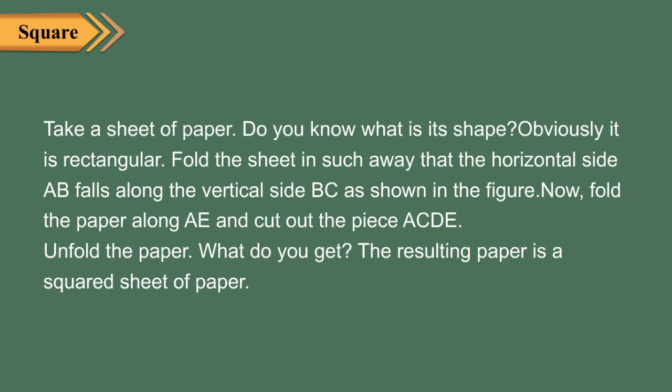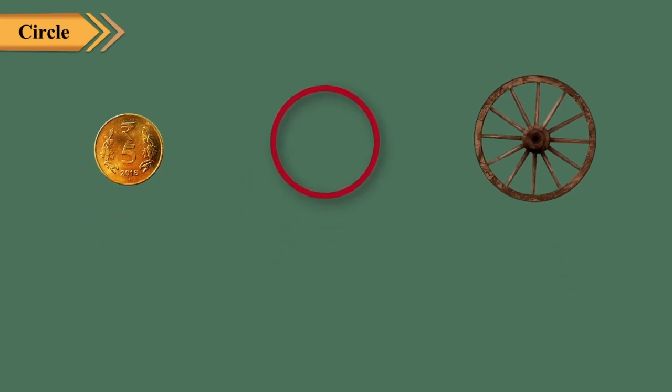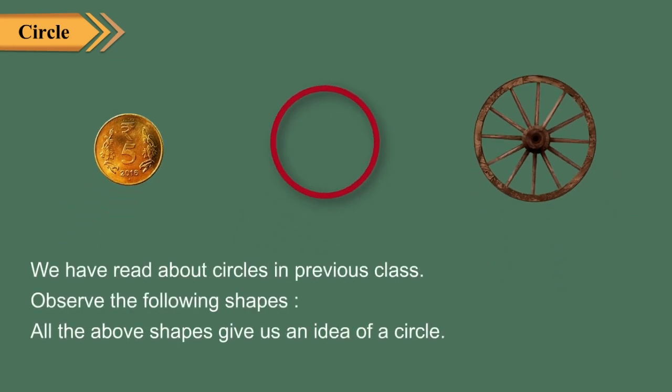Obviously it is rectangular. Fold the sheet in such a way that the horizontal side falls along the vertical side BC as shown in the figure. Now fold the paper along E and cut out the piece ACDE. Unfold the paper — what do you get? The resulting paper is a square sheet of paper.